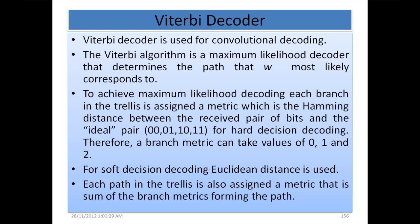Bismillah ar-Rahman ar-Rahim. The Viterbi decoder is used for convolutional decoding. The Viterbi algorithm is a maximum likelihood decoder that determines the path that most likely corresponds to the transmitted sequence. To achieve maximum likelihood decoding, each branch in the trellis is assigned a metric which is the Hamming distance between the received pair of bits and the ideal pair: 00, 01, 10, and 11, for hard decision decoding.